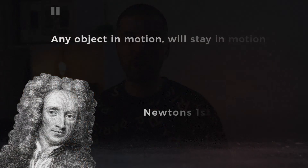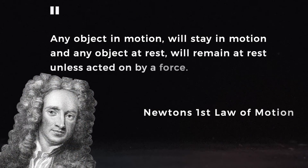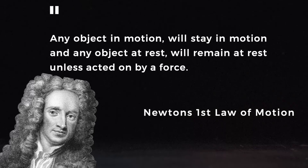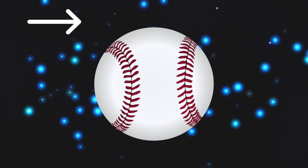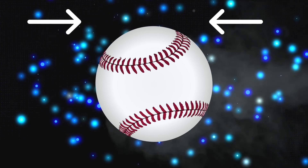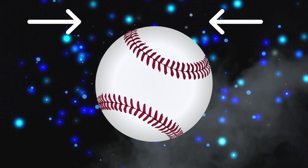According to Newton's first law of motion, any object in motion will stay in motion and any object at rest will remain at rest, unless acted on by a force. So how is a ball able to fly in a curved trajectory without any visible external forces? While the ball is flying and rotating, it is not only carrying air particles around it, but also meets other particles along the way, creating two zones.